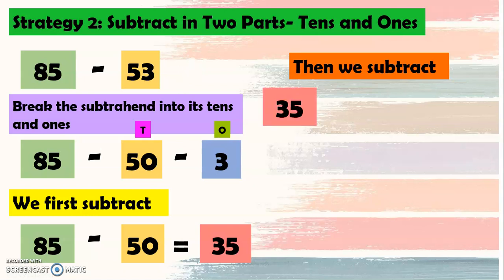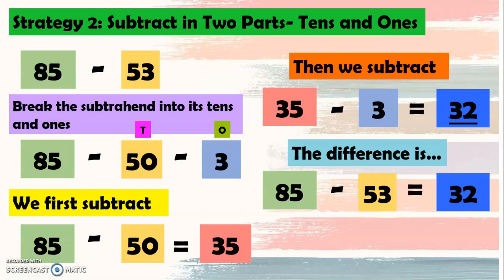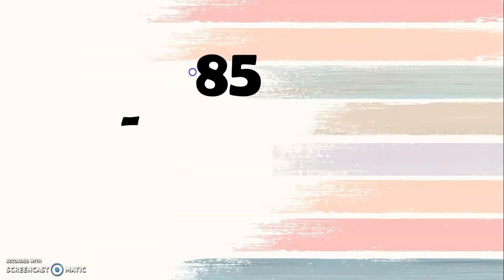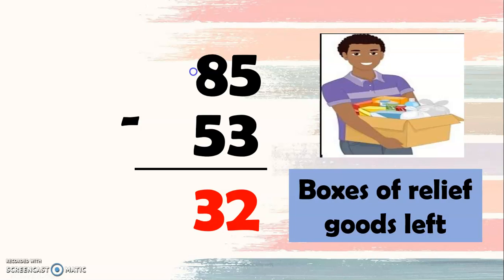Then we subtract 35 minus 3, and it equals 32. So the difference is 85 minus 53 equals 32. So 32 boxes of relief goods were left.